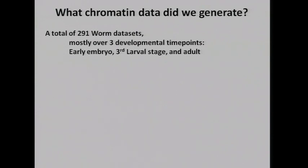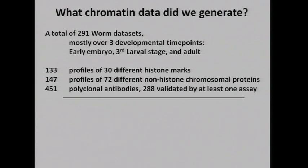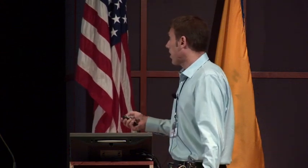Just to give you an idea of the types of data that are out there: for worms, we have a total of 291 datasets, mostly over three developmental time points — whole animal experiments, mostly early embryo, third larval stage, and adult. We've done 133 different profiles of 30 different histone marks, 147 profiles of 72 different non-histone chromosomal proteins. We generated a total of 451 polyclonal antibodies, 288 of which were validated by at least one assay meeting consortium standards — immunofluorescence or Western blot.